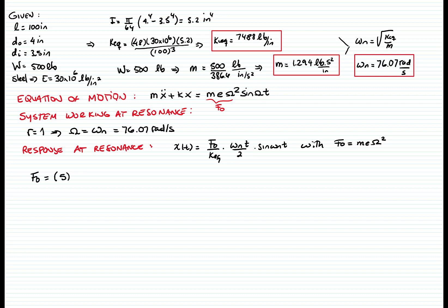If we calculate that F sub 0, m equals 5, e equals 2, and omega squared is 76.07 squared. That gives me a value of 149.076 pounds.